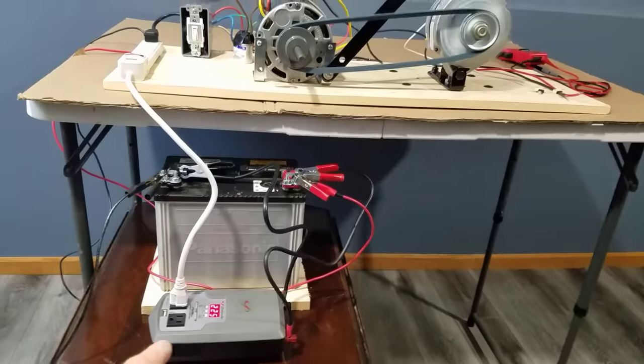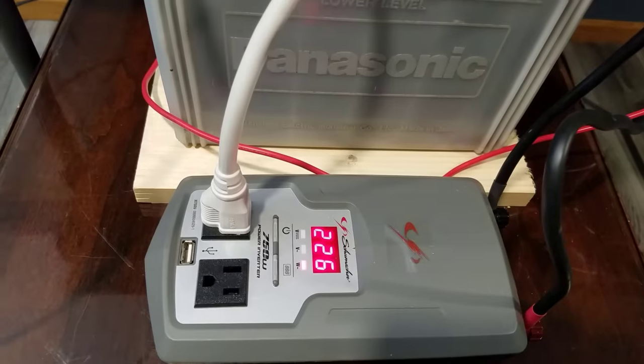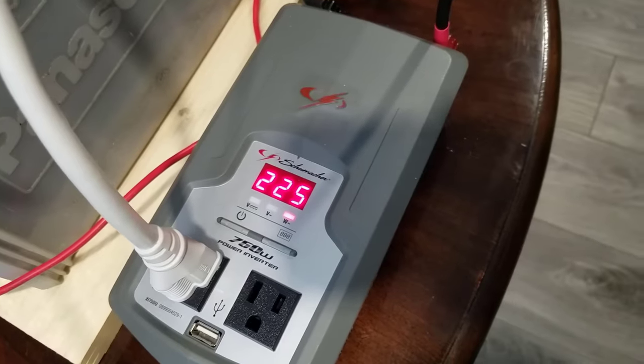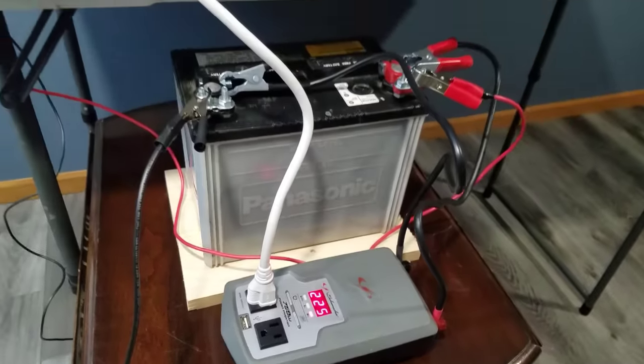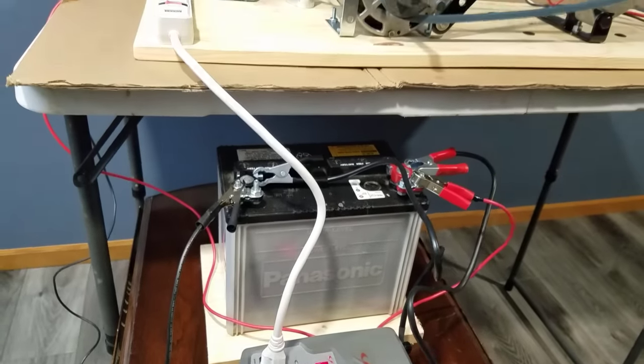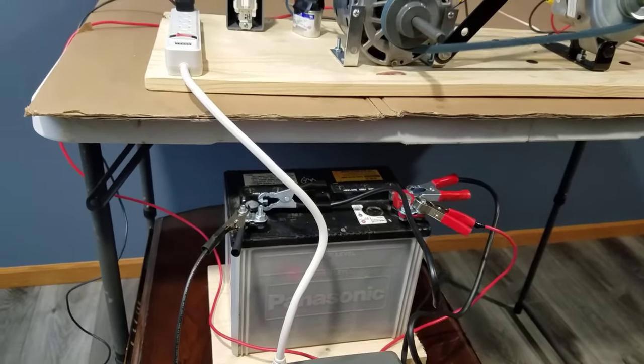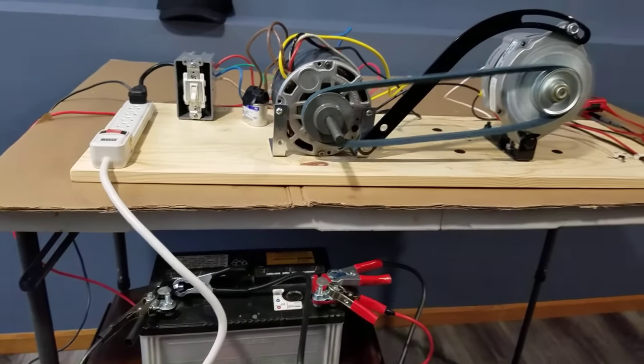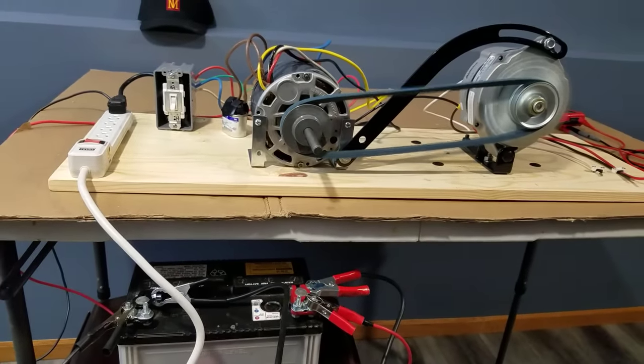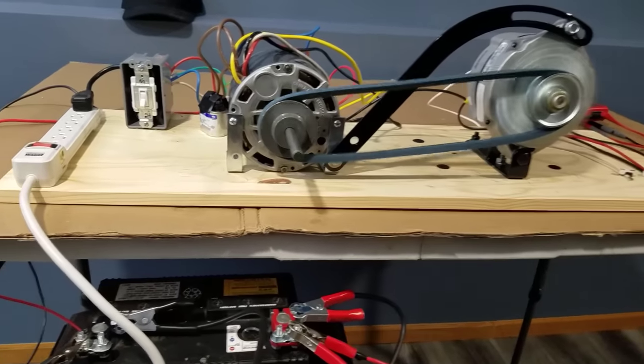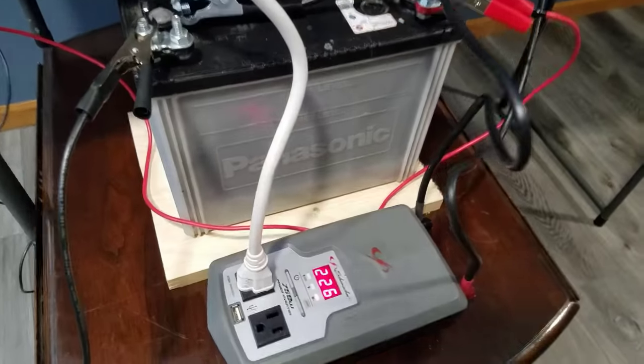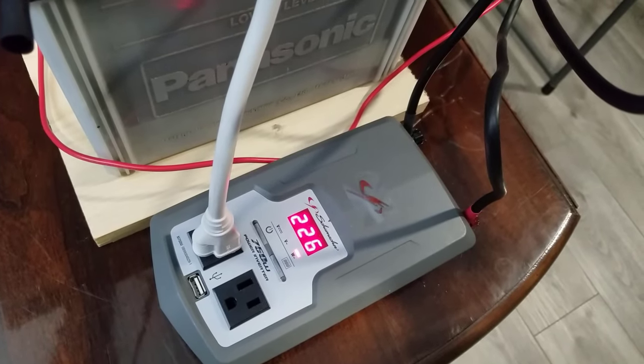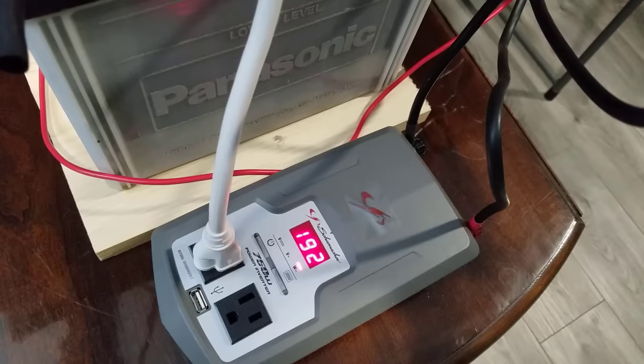This is the first test run. The car battery is used to supply the power to the 7500-watt inverter. The inverter then supplies the power to the furnace motor. The motor drives the alternator. Then our hope is for the alternator to generate enough amperage and voltage to recharge the car battery with excess AC power to run our home appliance.